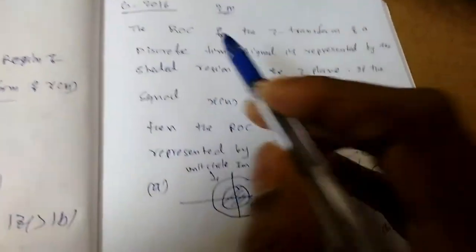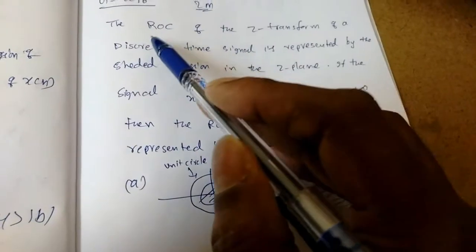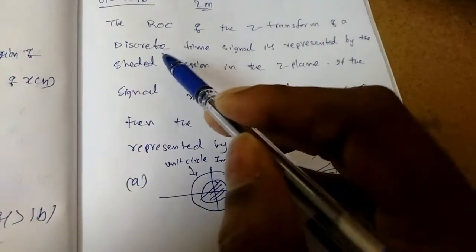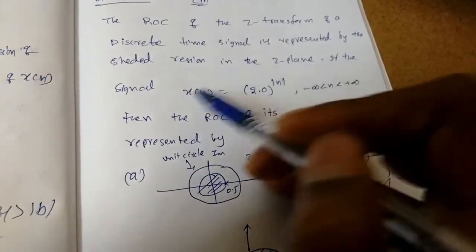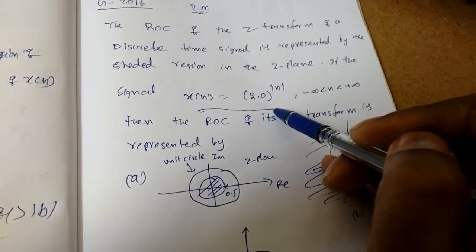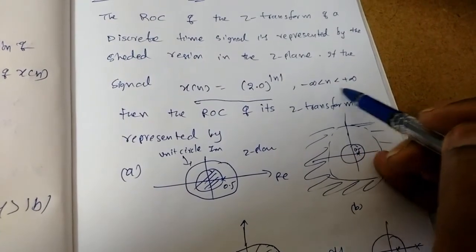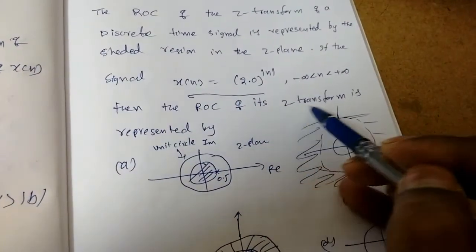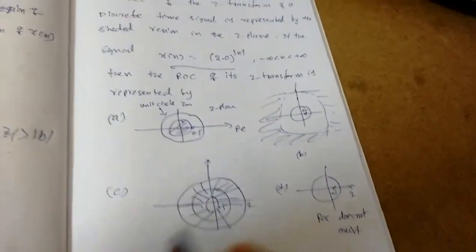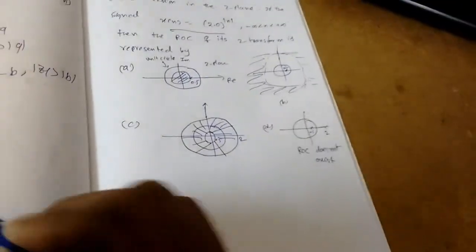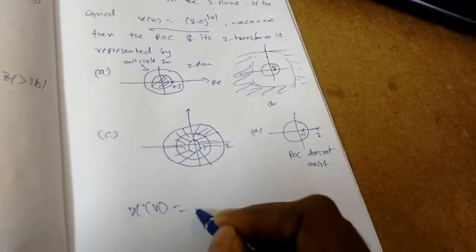Next, also in GATE 2016 but for two marks, a question came on ROC. The ROC of the Z transform of a discrete time signal is represented by the shaded region in the Z plane. If the signal x of n equals 2 power mod n for n from minus infinity to infinity, then the ROC of its Z transform is represented by which option? Just now we solved b power mod n, so let's apply the same approach.